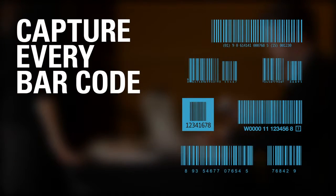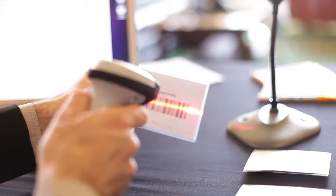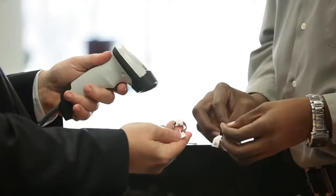The LI2208 captures virtually all 1D barcodes, including typical paper labels, mobile phone displays, and high-density barcodes.